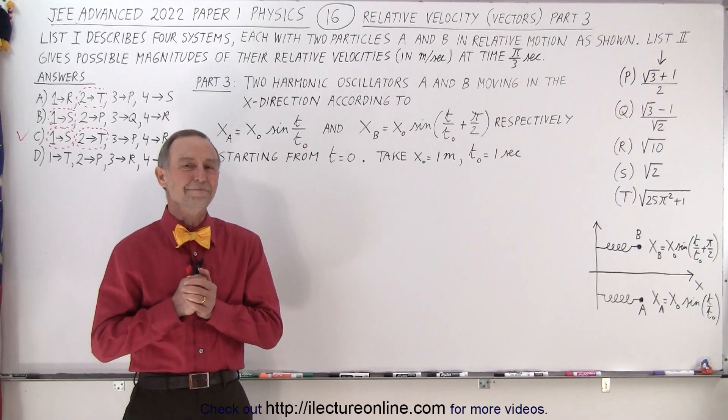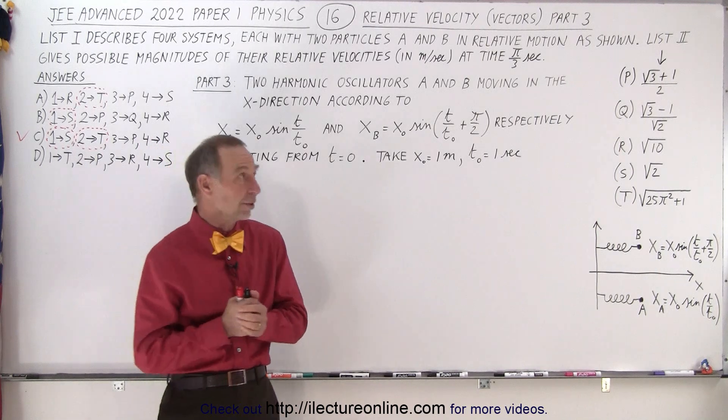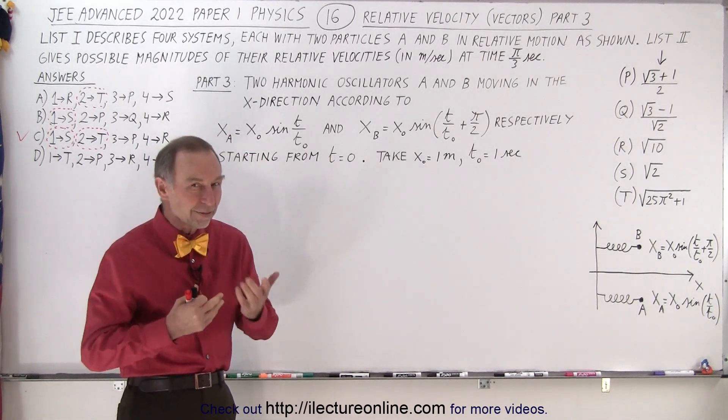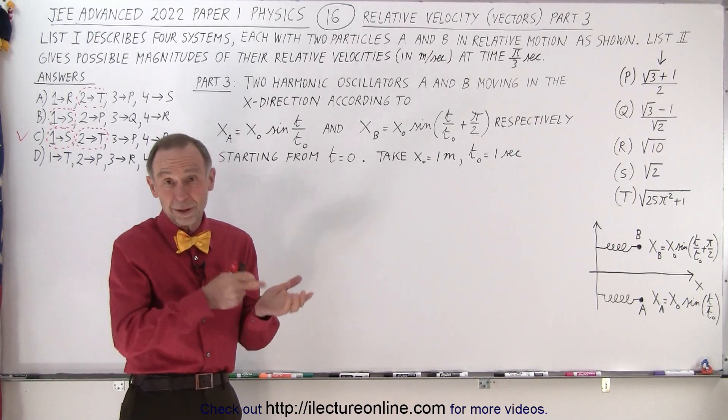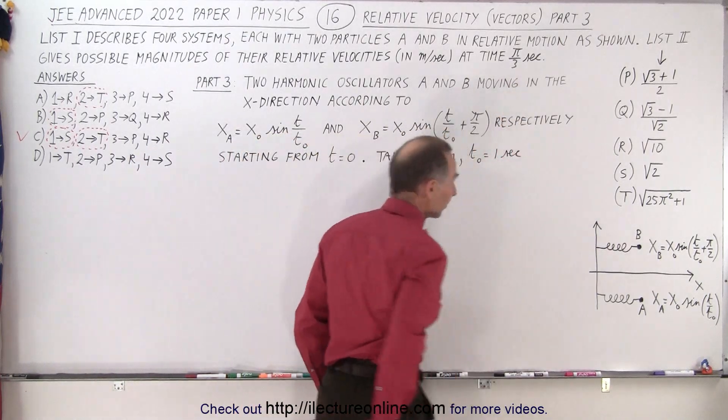Welcome to our lecture online. Now we're working on part three of the same problem that we started with, where we're dealing with two separate particles moving in some fashion, and we're trying to find the velocity between them, one relative to the other, at time equals pi over three seconds.